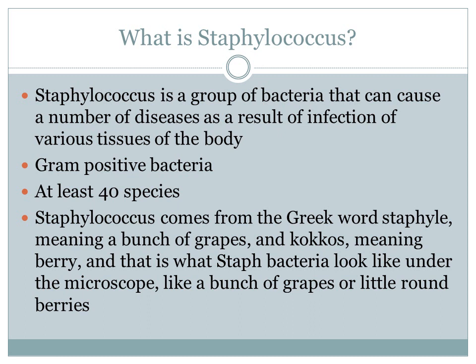What is Staphylococcus? Staphylococcus is a group of bacteria that can cause a number of diseases as a result of infection of various tissues of the body. Staphylococcus is also a gram-positive bacteria. It has at least 40 different species. The word Staphylococcus comes from the Greek word meaning 'bunch of grapes' and the Greek word 'coccus' meaning berry.